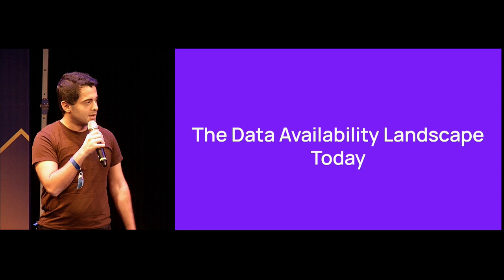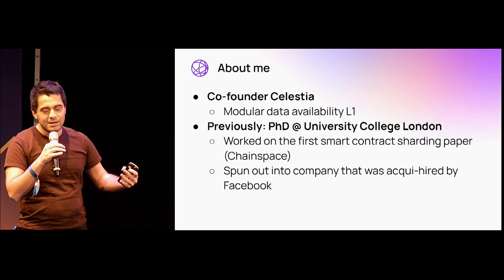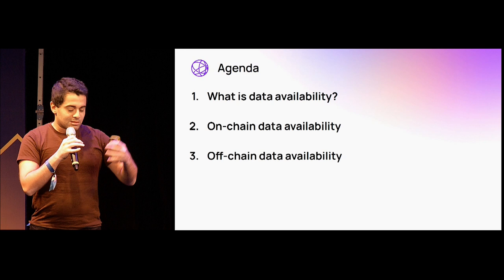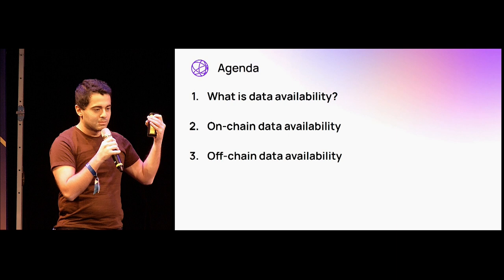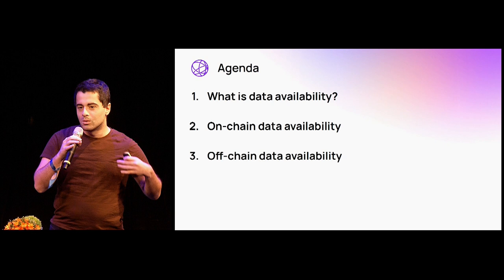This talk isn't specifically about Celestia because I'm going to try to give a neutral overview of the data availability landscape. Obviously I'm biased, so you can take that how you will, but I will try to be neutral. I'm going to discuss what data availability is, and then different approaches and trade-offs, because there isn't necessarily one size fits all solution — different applications might want different security or performance trade-offs.